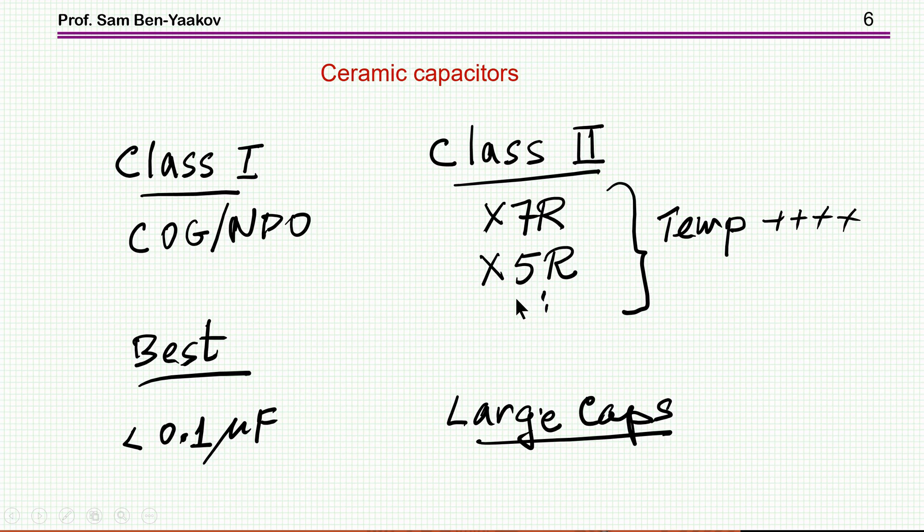And then you have to turn to the class 2, which is the X7R, X5R, and then there are many other materials. Normally, these are specified or qualified as temperature difference, that is, the temperature stability of this is different. This is correct.